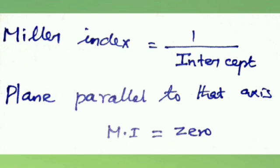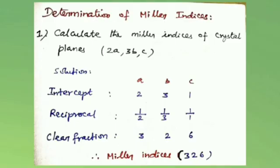The Miller index must be equal to one by intercept, and if the plane is parallel to that axis, the value of Miller index is zero. Now we move to the calculation section: determination of Miller indices. Here is the first problem: calculate the Miller indices of crystal plane with intercepts 2a, 3b, c along the x, y, z axes.